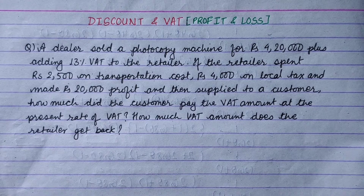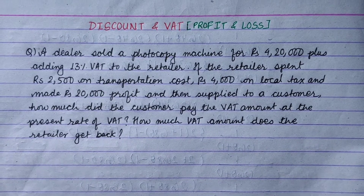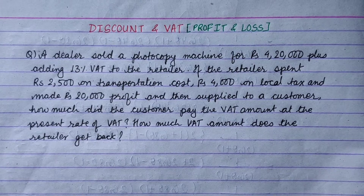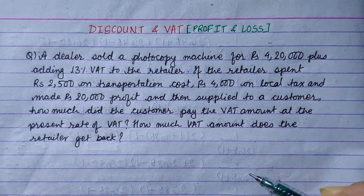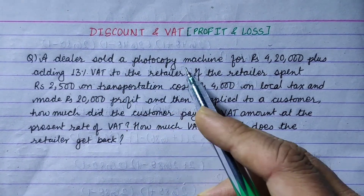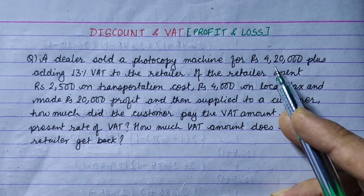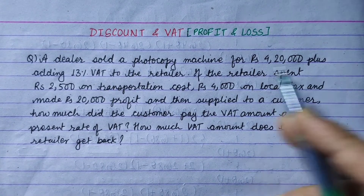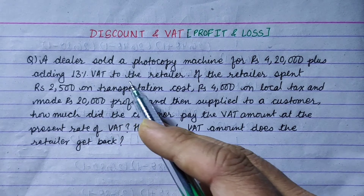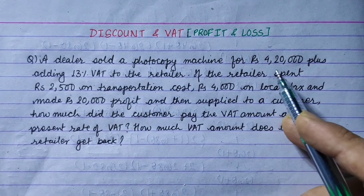Hi everyone. This is an important question for professional school. A dealer sold a photocopy machine for rupees 4,20,000 plus 13 percent VAT to the retailer.